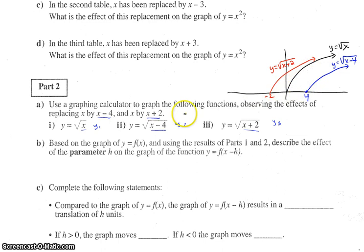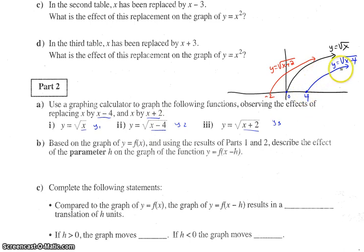Let's take a look at these functions. The original function, y equals square root of x, is this black line here. Our little anchor point or key point is at zero, zero. When we graphed y equals the square root of x minus four, we would get this blue graph approximately. The key thing is this anchor point is now at four as opposed to zero, zero. It seems to have moved right four.